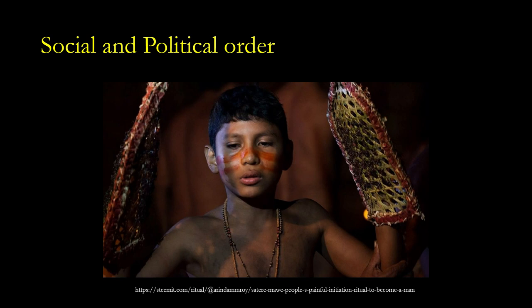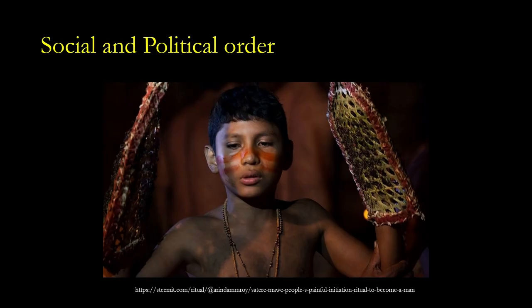For the social and political order function, here is a picture of the Satere-Mawe community of Brazil. This is a custom followed when a boy is about 12 years of age to celebrate his transformation from a boy to a warrior. In this custom, a boy has to wear gloves filled with bullet ants on both hands and is supposed to endure the pain of thousands of ant bites for about 5 minutes, repeated over a period of about 20 times. Only when the boy is able to endure this pain is he considered to have become a warrior. This is how the community maintains its social and political order.